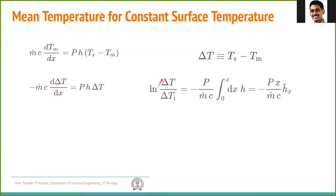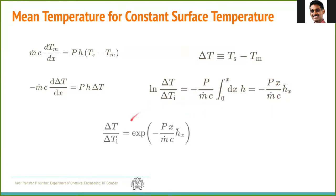The expression turns out to be: ln(ΔT / ΔTi) equals the integral from 0 to X of H·dx divided by Ṁ·C, where ΔTi is the temperature difference Ts minus Tm at the inlet (X=0). Recognizing that (1/X) times the integral is the average H-bar, this becomes H-bar times X. Therefore, ΔT goes exponentially with X. In the case of constant heat flux it was linear; here, ΔT — and hence Tm — varies exponentially.